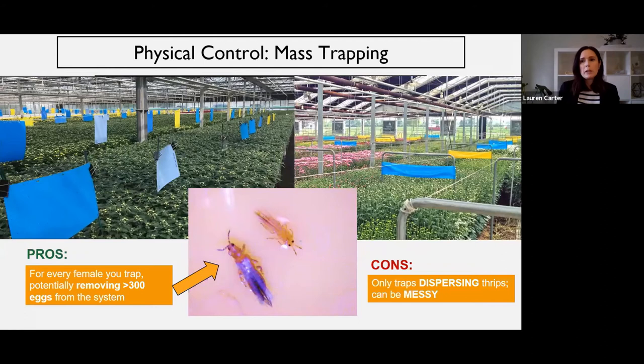I'm a big proponent of mass trapping. I think it's useful because for every female you trap, you can potentially remove 300 eggs of thrips from the system. The cons are that it only really traps dispersing thrips — it can't really suck thrips out of the crop. Tape can be messy and can interfere with some actions like pinching, but you can do things to help mitigate that.